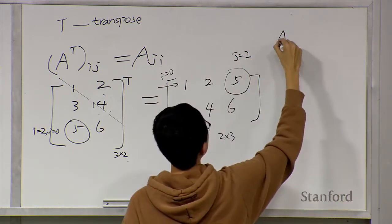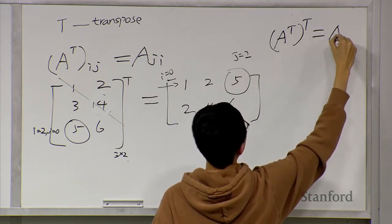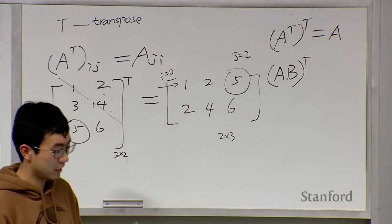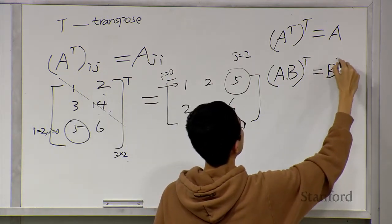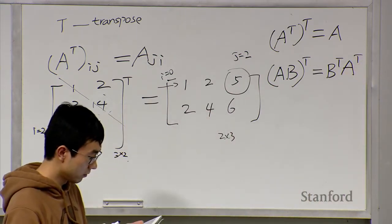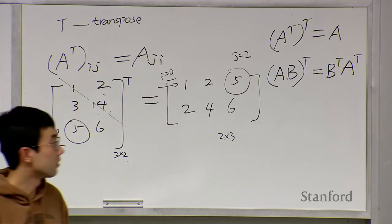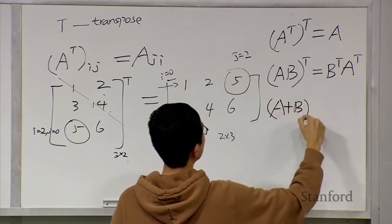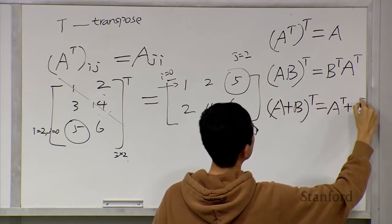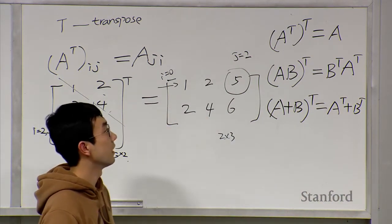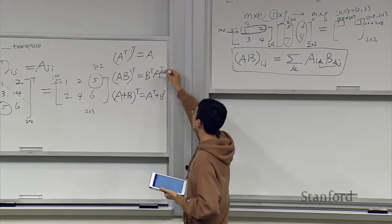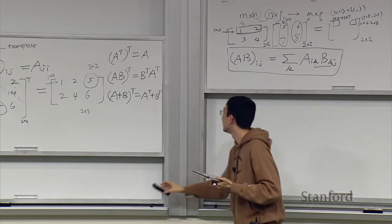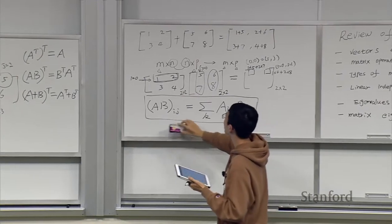Properties of transpose: first, taking the transpose twice returns the original matrix. Second, (AB)^T equals B^T times A^T. Third, (A plus B)^T equals A^T plus B^T.